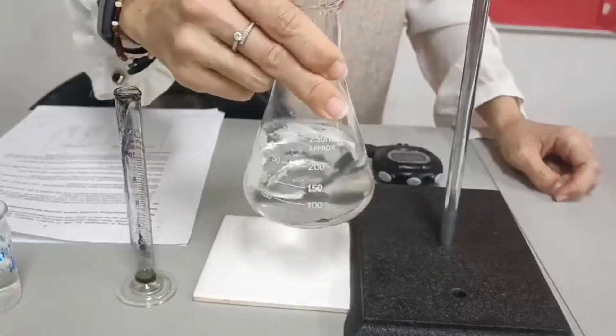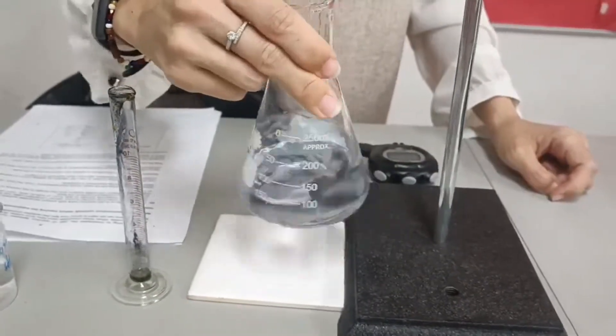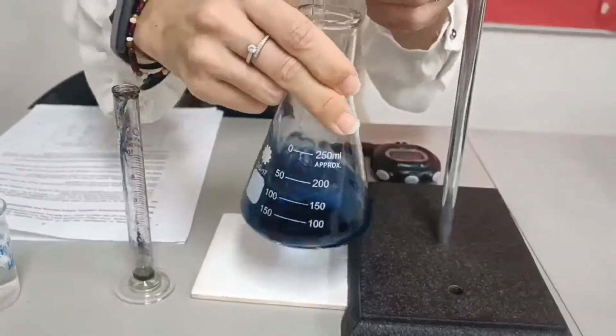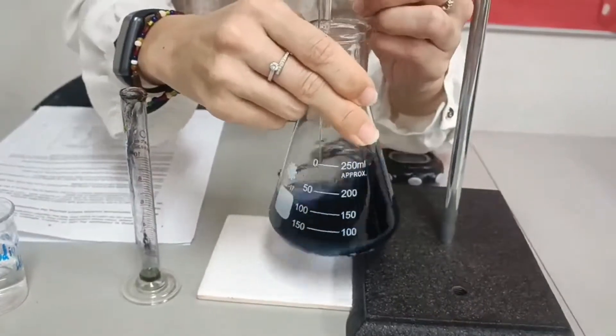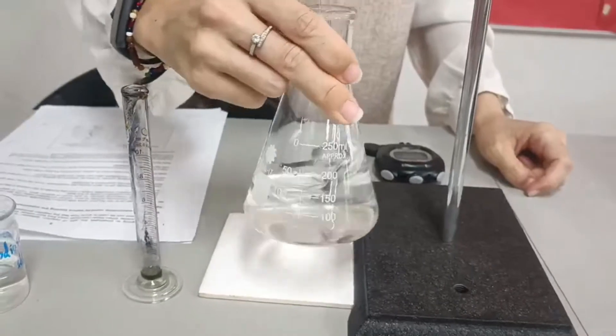And when you add the thiosulfate solution, you have to keep on swirling the solution. That's your next reading. And you keep on doing this until you have added 4 ml of thiosulfate.